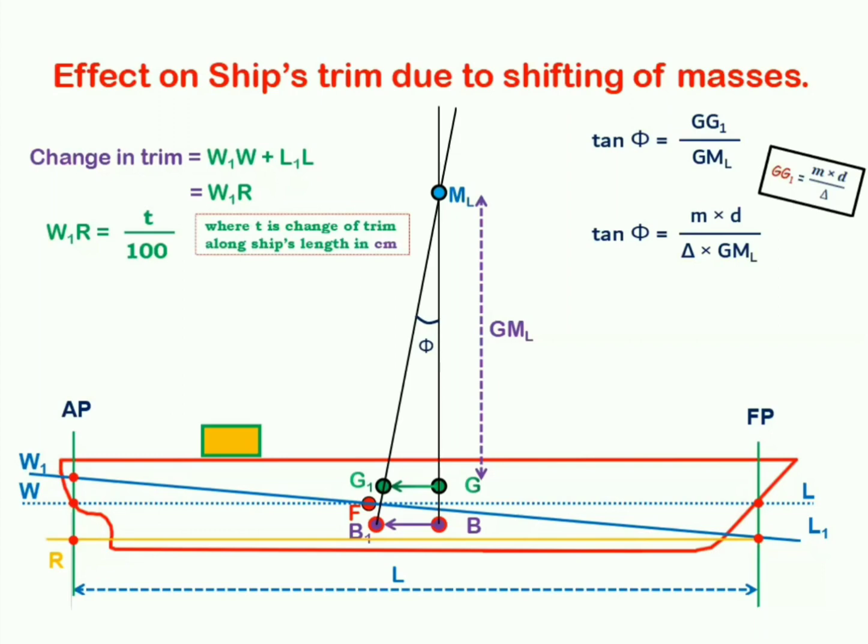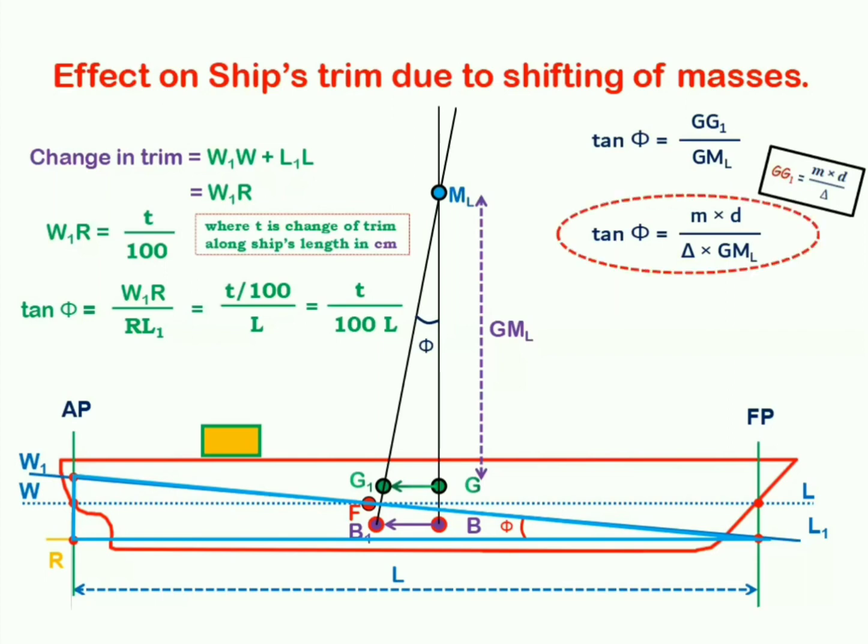Now, looking at the triangle W1RL1, we can say tan phi equals W1R upon RL1. RL1 equals ship's length. We are considering length between perpendicular. And W1R can be replaced with t upon 100. So, finally tan phi would become equals to t upon 100L. See, we have also defined an expression for tan phi before. Let us equate these two expressions together.